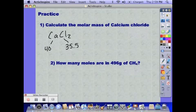But we have two chlorines so we have to multiply that one by two and add them up, which gives us 111 grams per mole.